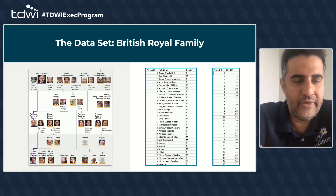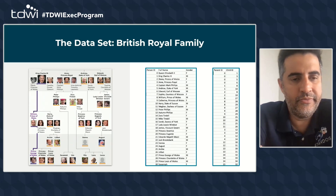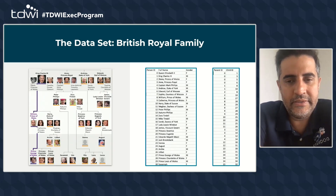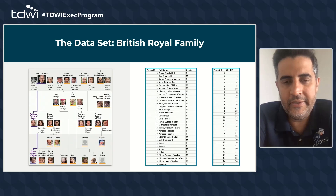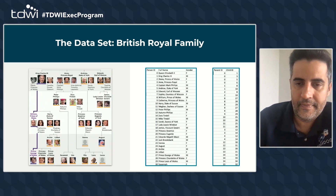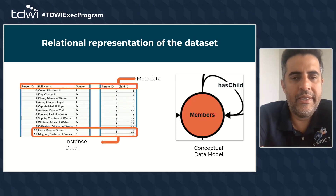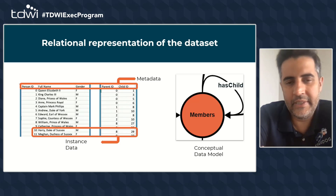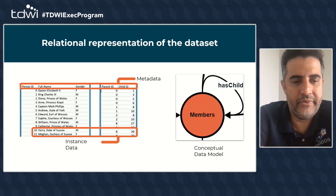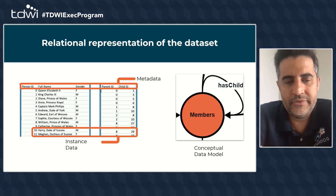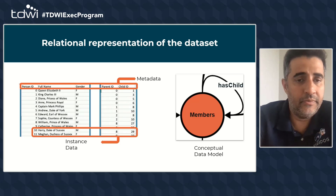Everyone is familiar with the British Royal Family. This is a representation of that royal family's relationships in a hierarchy — the king and queen, their children, their children's children. There's a hierarchy neatly represented in tables: person ID, name, gender, and the relationship between parent and child. When we look at the metadata, we see people, names, genders, parent and child identifiers. In a conceptual data model, members are related to other members through a parent-child relationship.